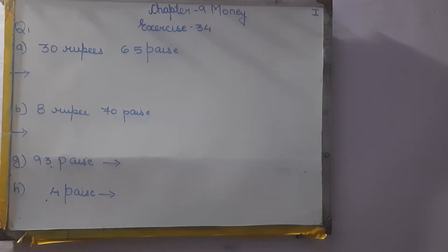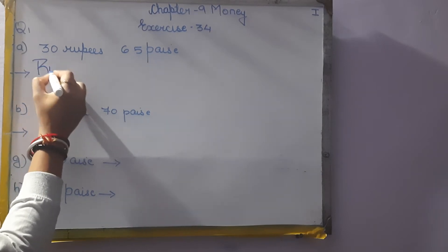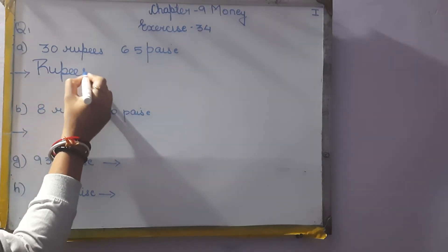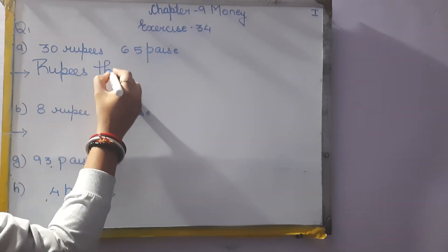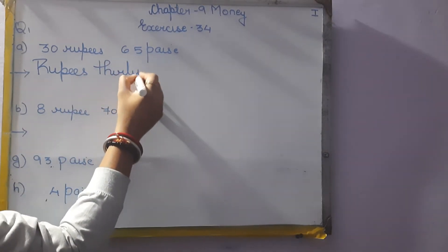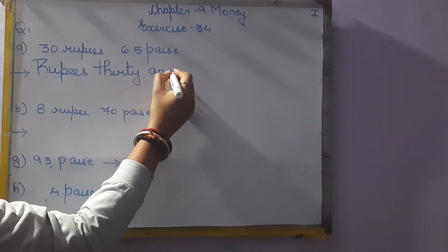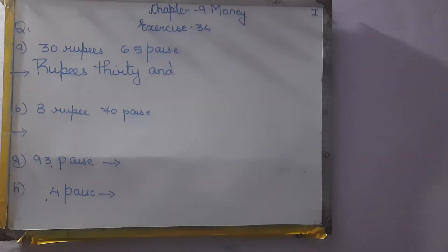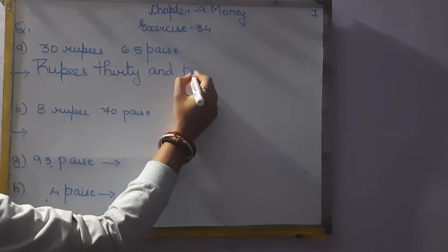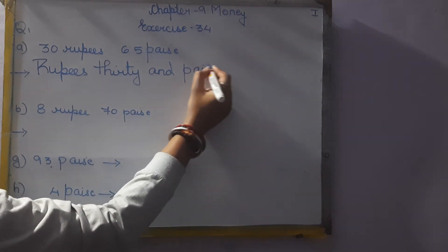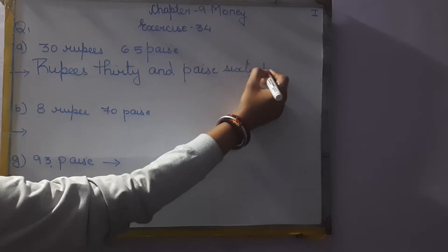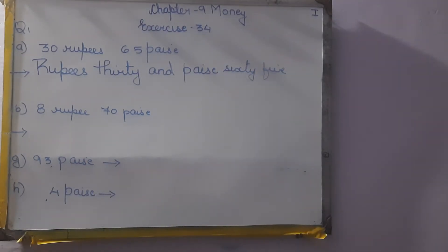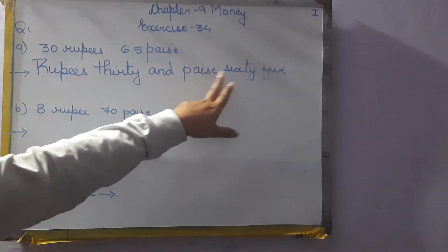We have to write this amount in words. So how we write? Rupees thirty and paise sixty-five. So we have written: Rs. 30 and paise 65.